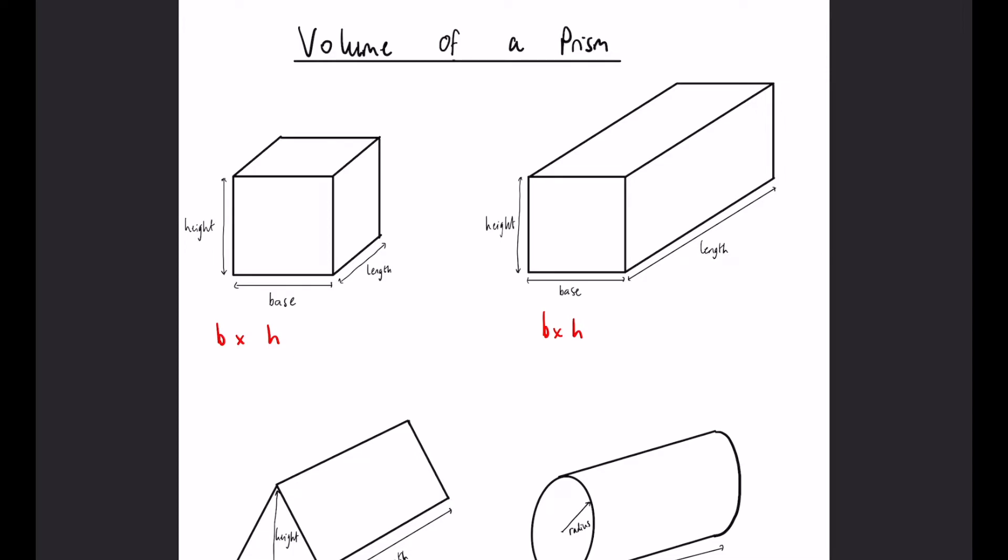So the volume, once we've worked out the area of the front face—also known as the cross-sectional area—all we have to do is multiply it by how far it's been pulled back, which I've signified with the length in all of these. So it's base times height times length.